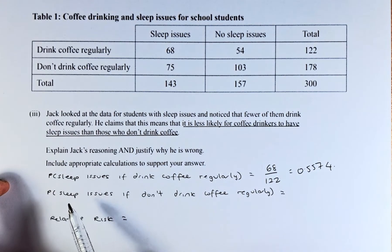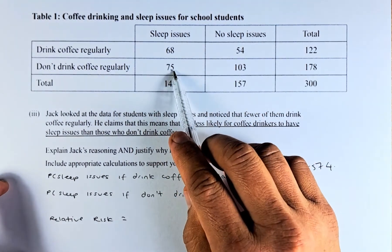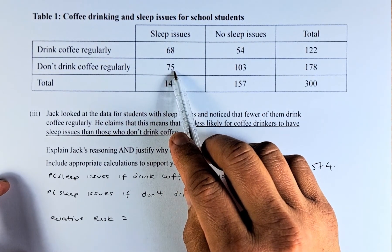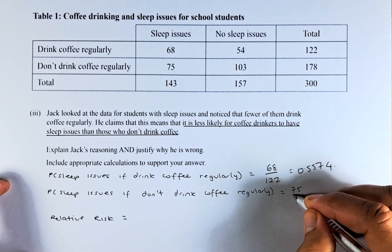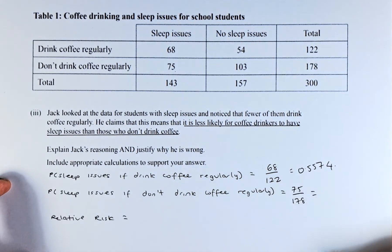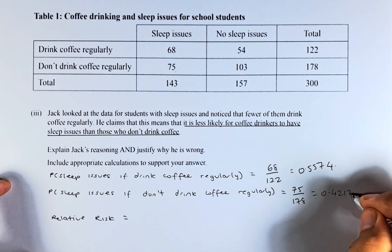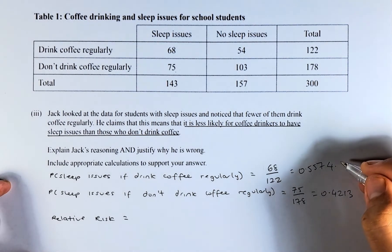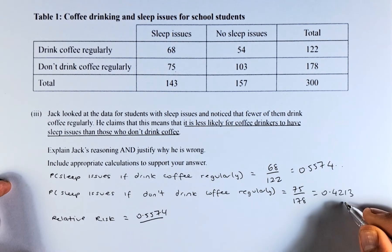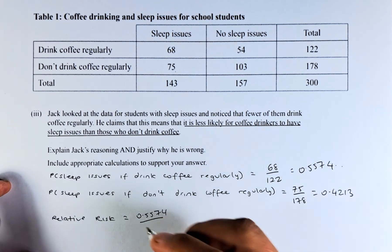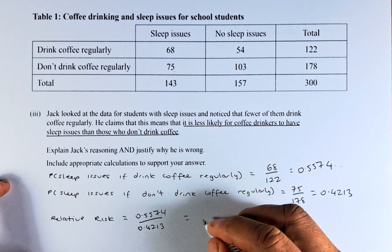On the other hand, for those who don't drink coffee regularly, the total is 178. If they have sleep issues, the probability is 75 out of 178, which converts to 0.4213. To calculate the relative risk, we take 0.5574 divided by 0.4213, and the answer comes to 1.323.